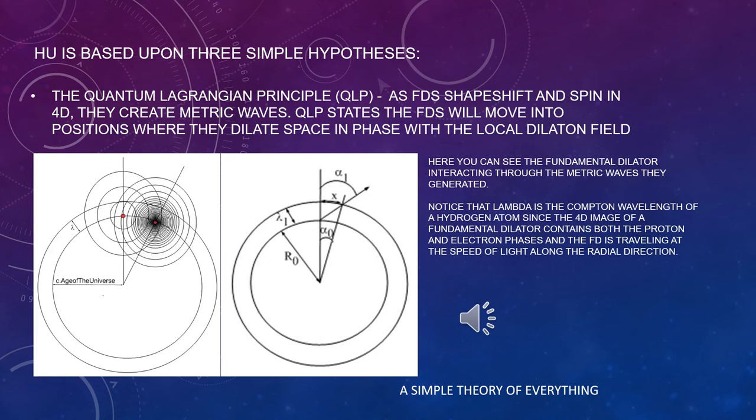The quantum Lagrangian principle, QLP: as fundamental dilators shapeshift and spin in 4D, they create metric waves. QLP states the fundamental dilators will move into positions where they dilate space in phase with the local dilaton field. That is the simplest, no work constraint possible. It is also the fundamental law of physics. From it all laws of nature can be derived.